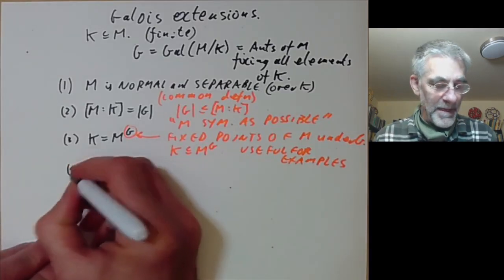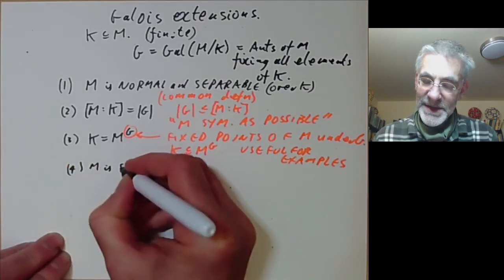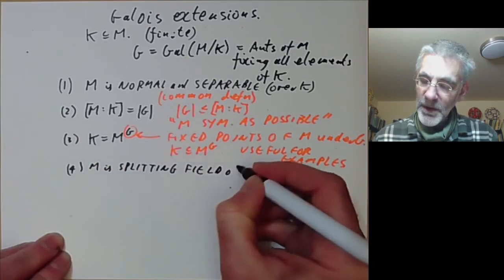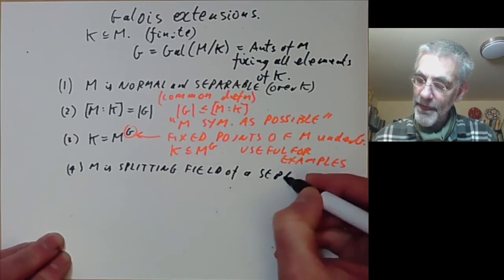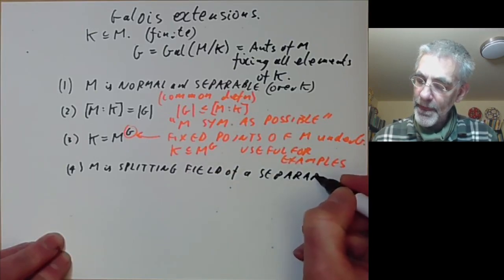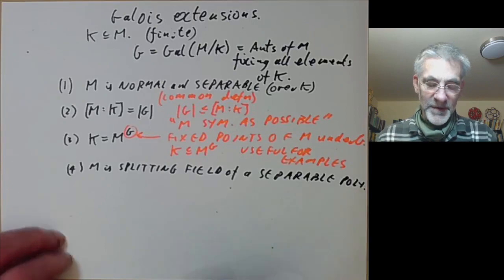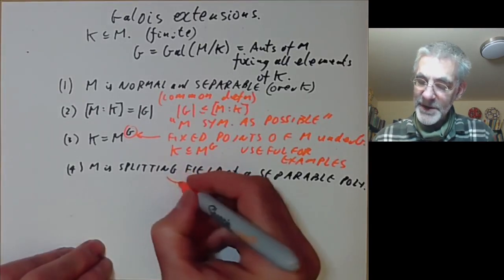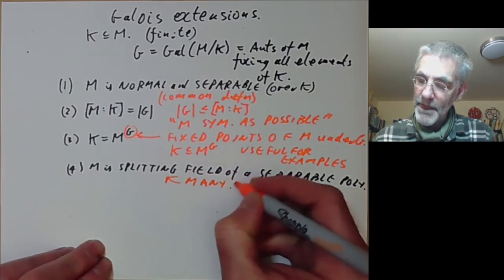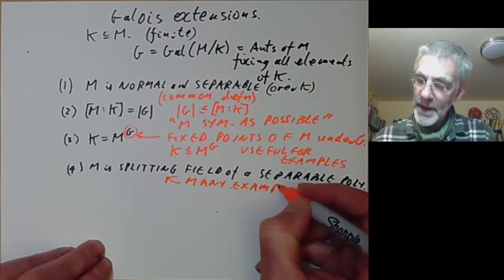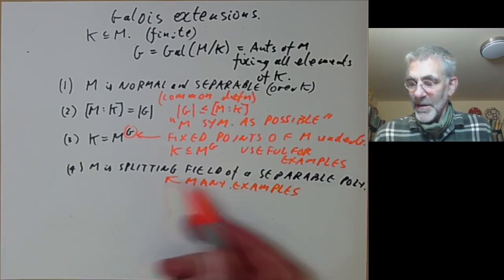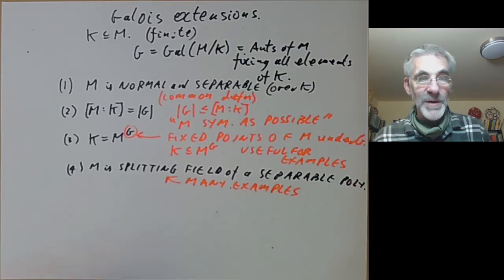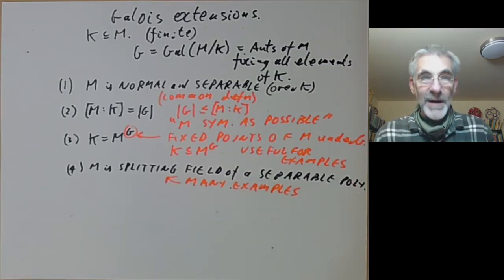The fourth condition says that M is a splitting field of a separable polynomial over K. This is also really useful for giving examples — you can just take your favourite separable polynomial and take its splitting field to get a Galois extension.